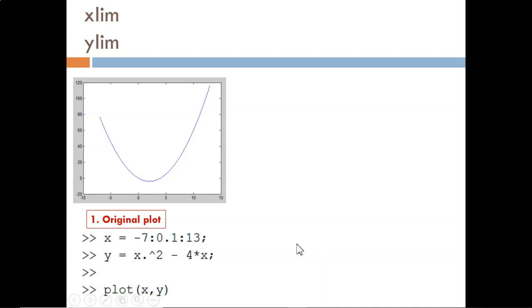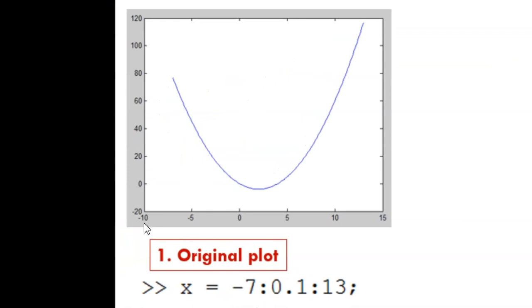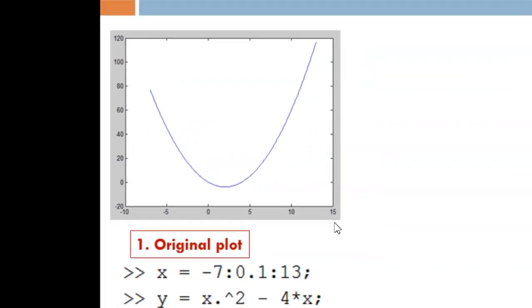First, we create a starting plot. This one shows the equation y equals x squared minus 4x for x values from negative 7 to positive 13. MATLAB will automatically choose axes limits that go slightly beyond the domain and range. Notice how the x-axis starts at negative 10 and extends to positive 15.